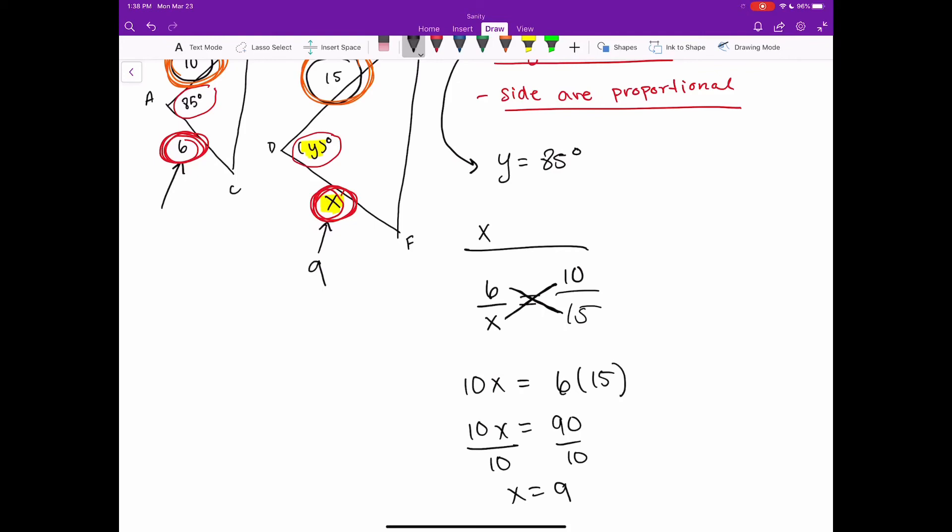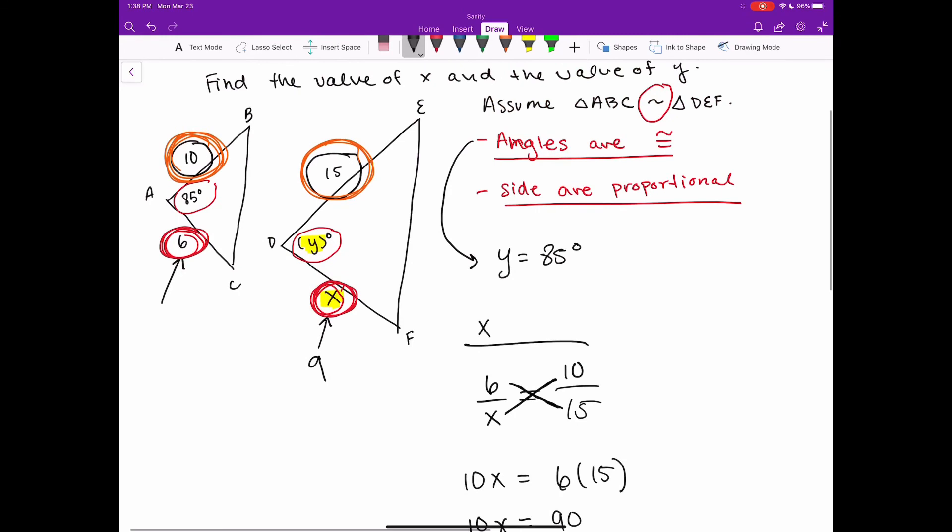So this value right here has to be 9. Maybe we're talking about feet, 9 feet, 9 centimeters, I don't know. And that kind of checks out. If you think about it, we'd have the scale factor of 1.5, multiply 10 by 1.5 we get 15. So multiply 6 by 1.5 and 6 times 1.5 is indeed 9. So that checks out.